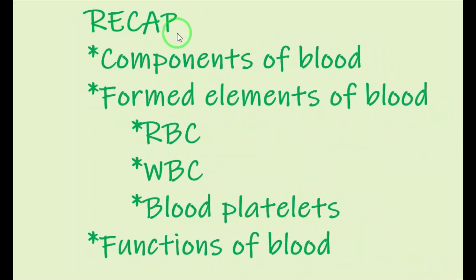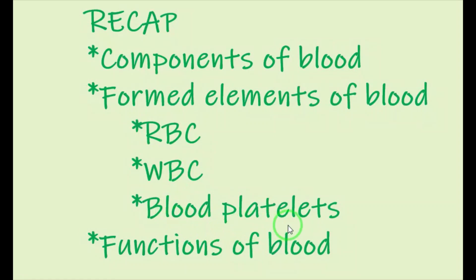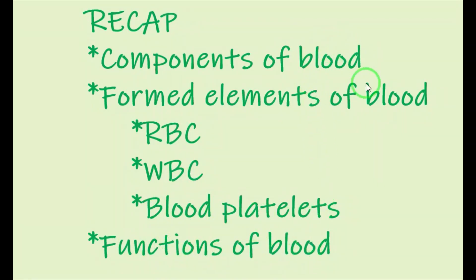Let's see a small recap. Today we completed: components of blood — plasma and formed elements. Formed elements are classified into three: RBC, WBC and blood platelets. WBC is of two types: granulocytes and agranulocytes. Granulocytes are classified into three types: neutrophils, basophils and eosinophils. Agranulocytes are of two types: monocytes and lymphocytes. The third formed element is blood platelets, and finally we covered functions of blood.